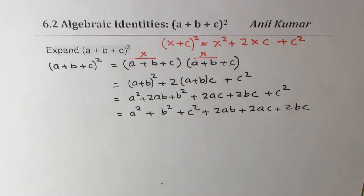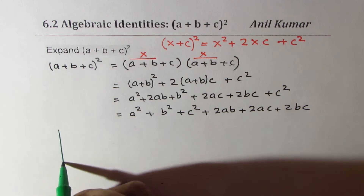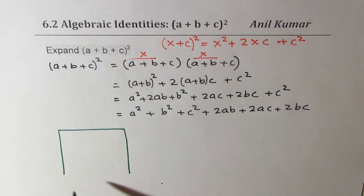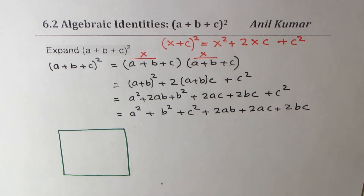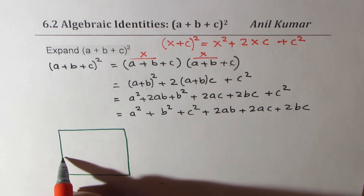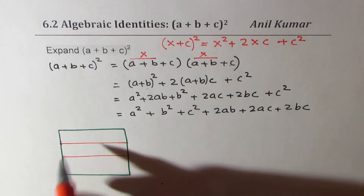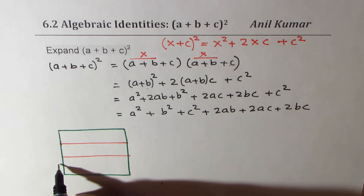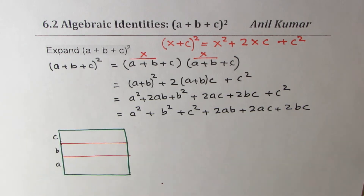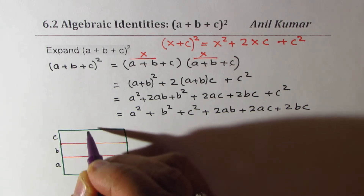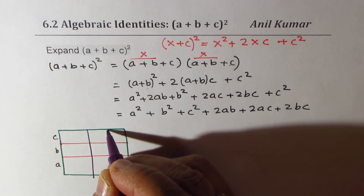If you look at it, you have three squares: a² + b² + c², and also 2ab + 2ac + 2bc — twice the combination of each pair. That is the complete expansion of (a+b+c)². Now let's try to visualize this — we'll make a square whose sides are a+b+c, dividing the sides so that one part is a, one is b, and one is c.